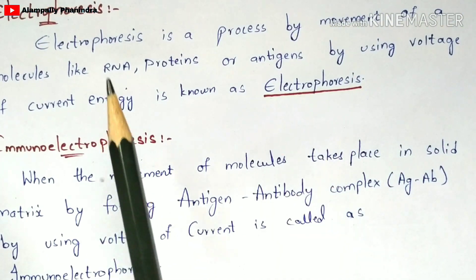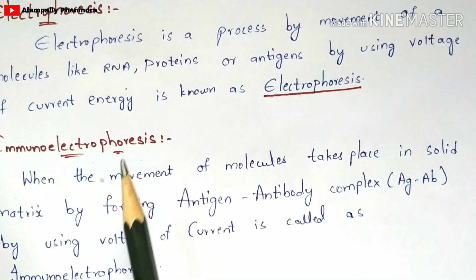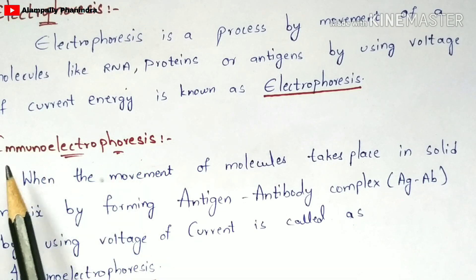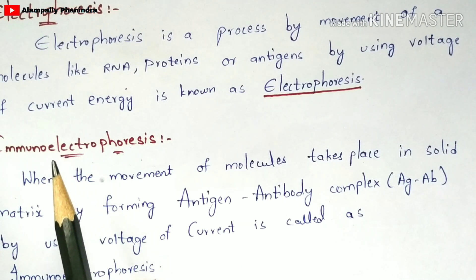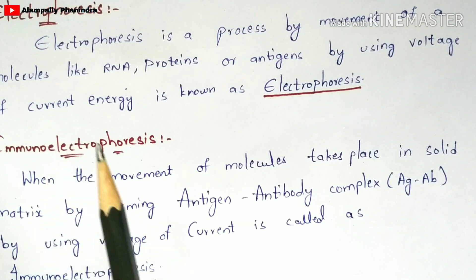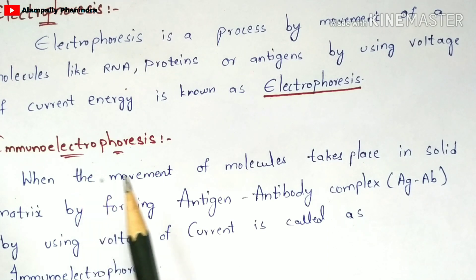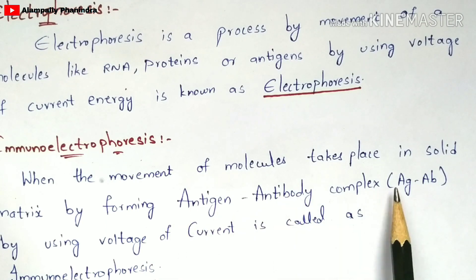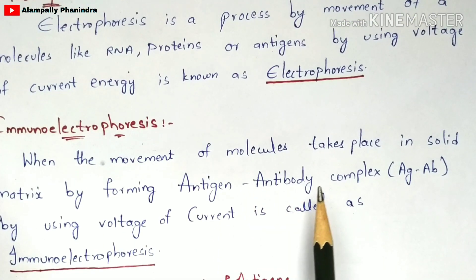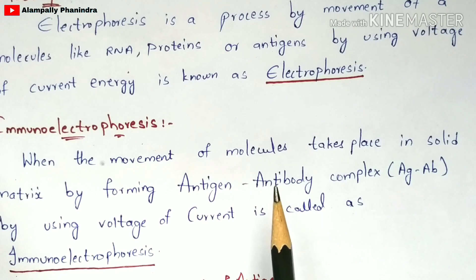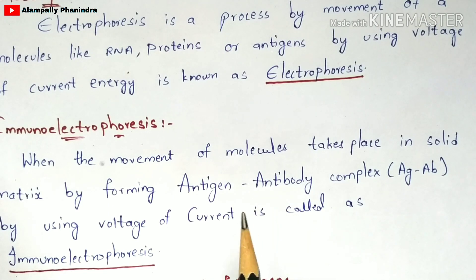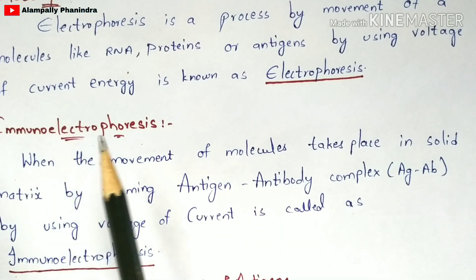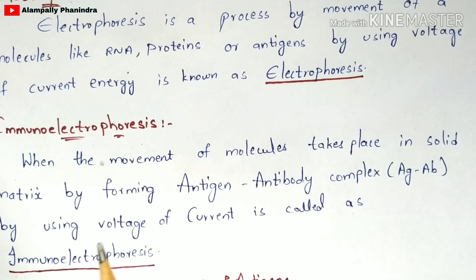Immunoelectrophoresis is similar to electrophoresis, but here immunology plays a major role — specifically antigens and antibodies. When the movement of molecules takes place in a solid matrix by forming an antigen-antibody complex using voltage or current, it is called immunoelectrophoresis. Because the antigen-antibody complex plays a vital role in immunology, this method is called immunoelectrophoresis.